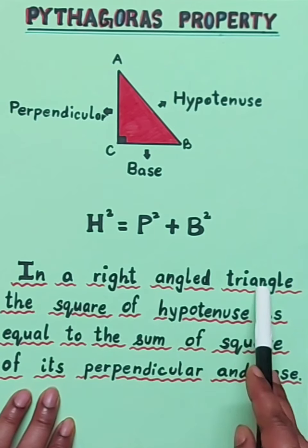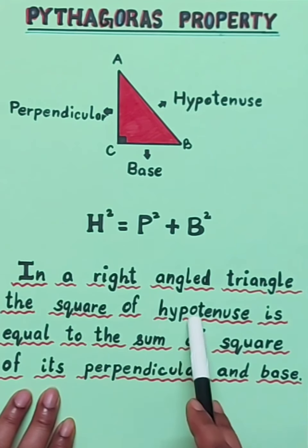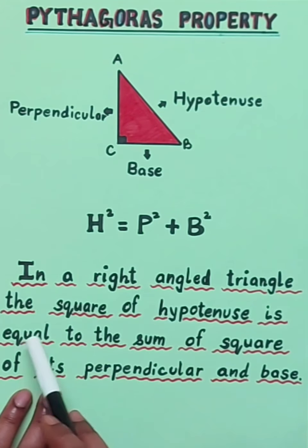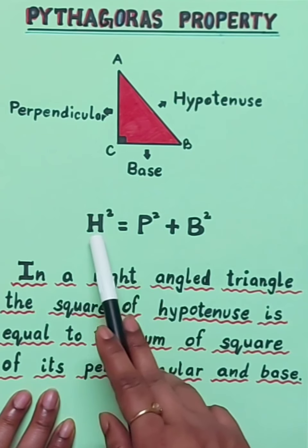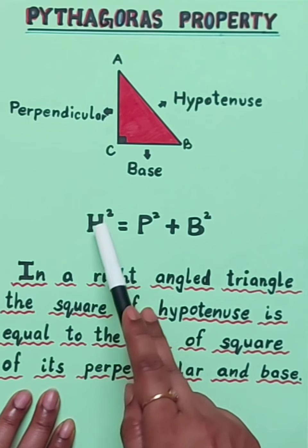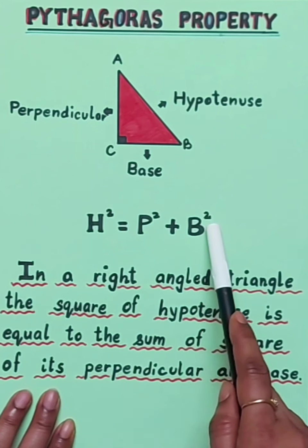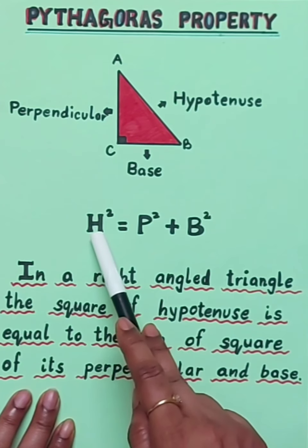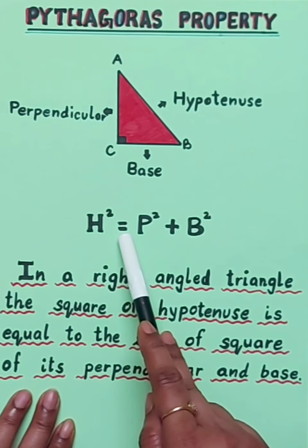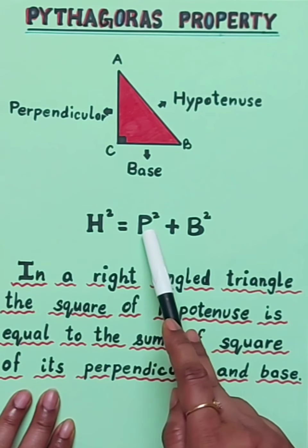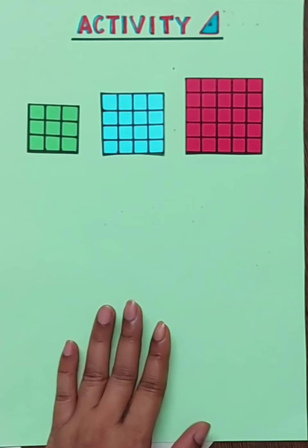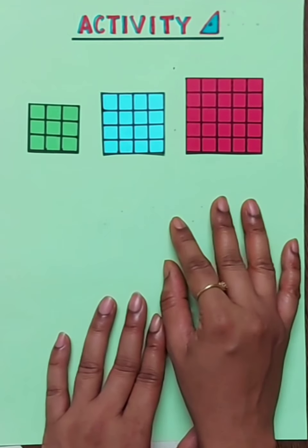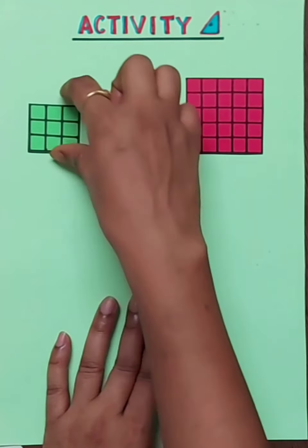This slanting side AB is known as the hypotenuse of this triangle. According to Pythagoras property, in a right-angled triangle, the square of hypotenuse is equal to the sum of the square of its perpendicular and base. Here I have written H square is equal to P square plus B square.